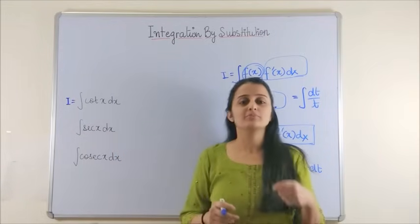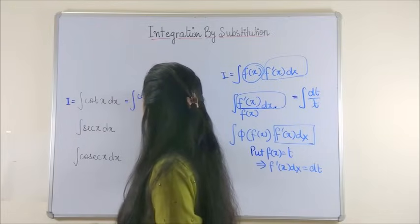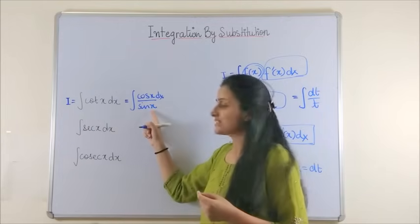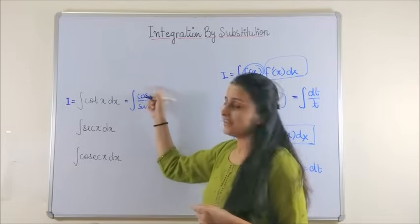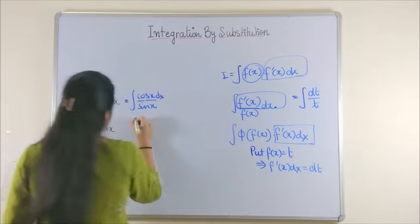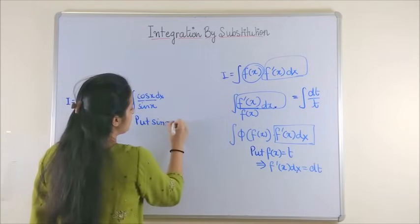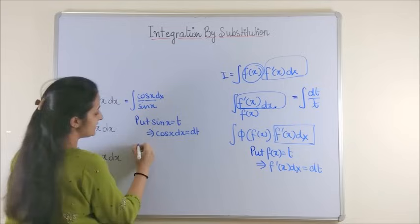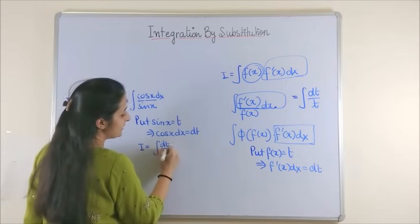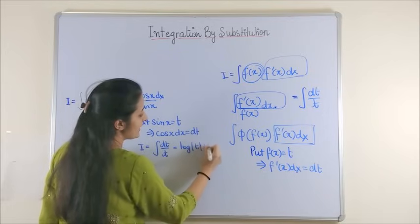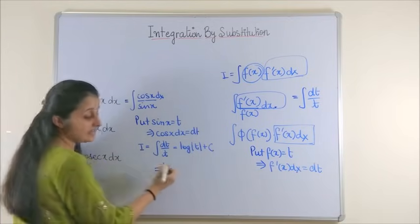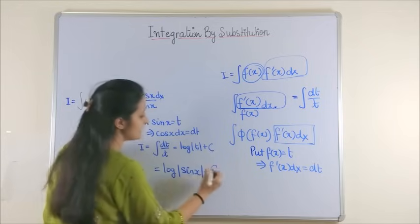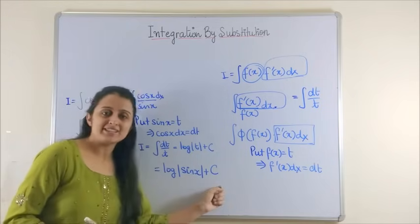The integral of cot x can be written as the integral of cos x / sin x dx. If we put sin x = t, the derivative is right there on top: cos x dx = dt. The integral becomes dt/t = log|t| + c. This time the answer comes directly as log|sin x| + c. So the integral of cot x dx is log|sin x| + c.